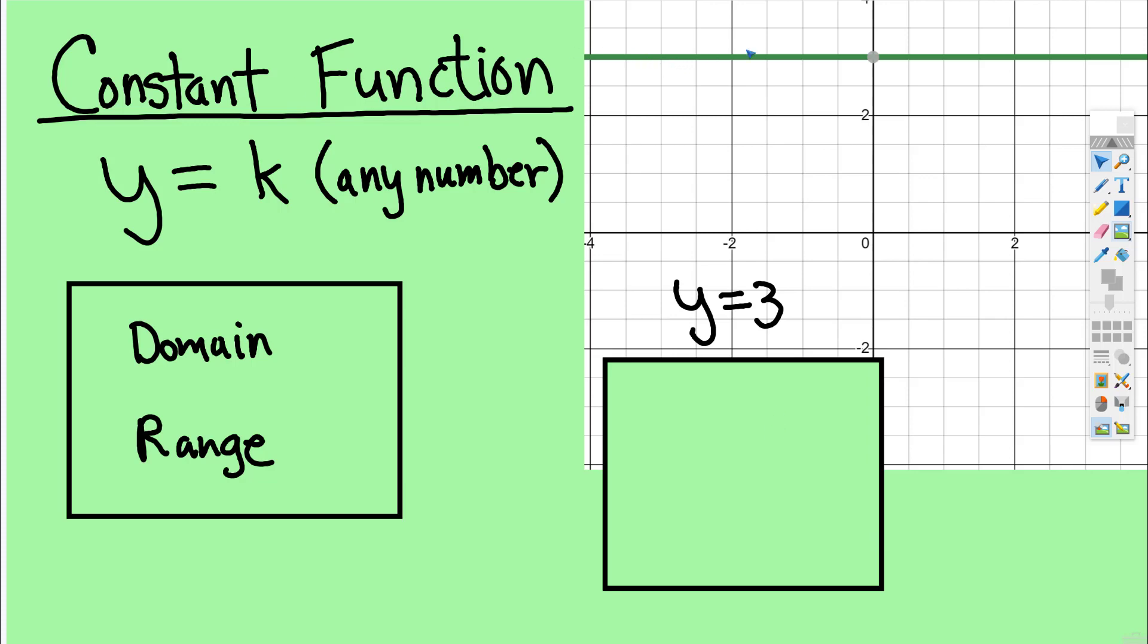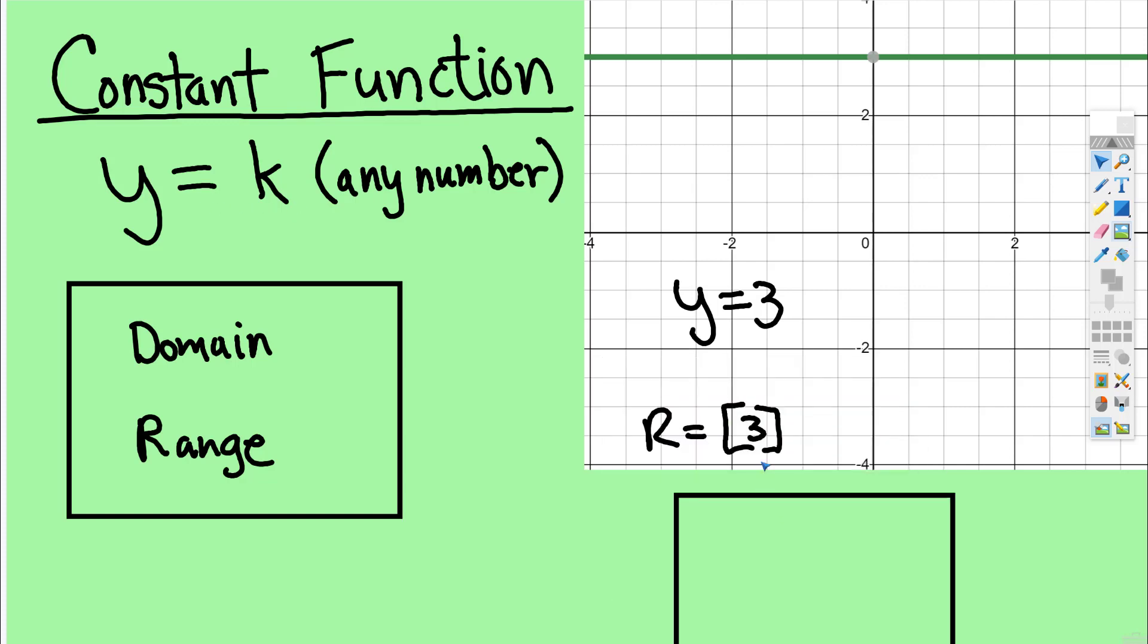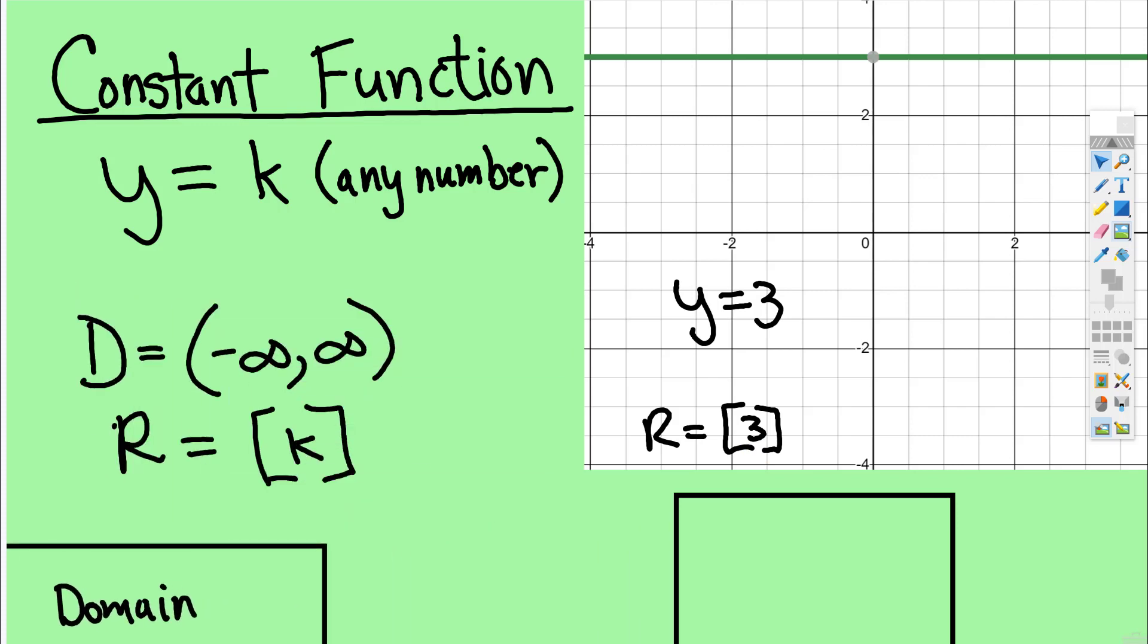So the constant function is a horizontal line at whatever number y is equal to. And the range for that, or for any constant function...